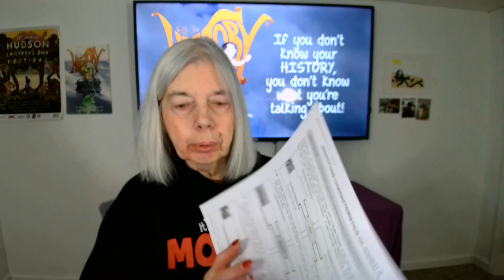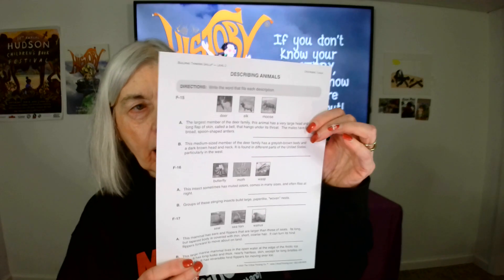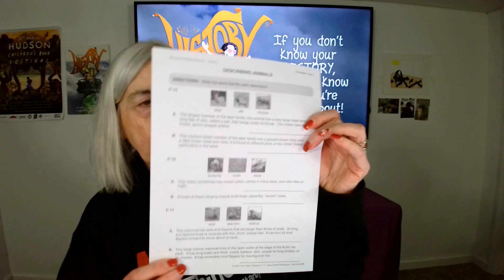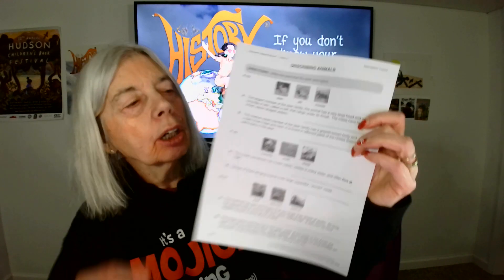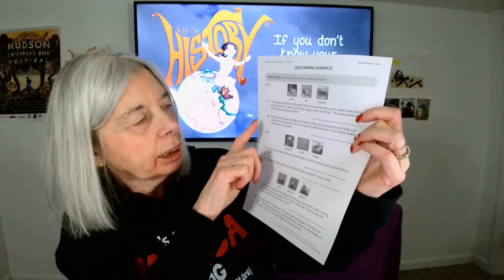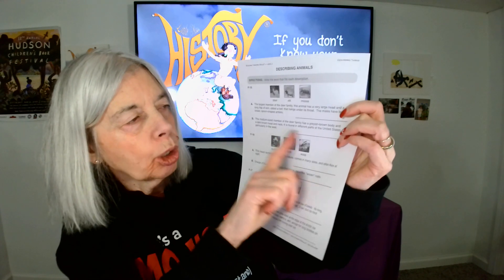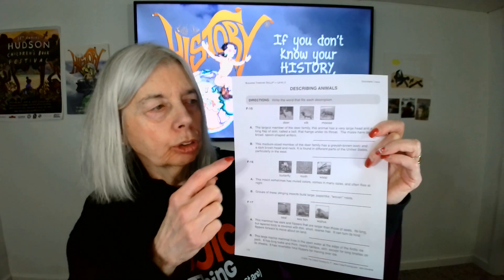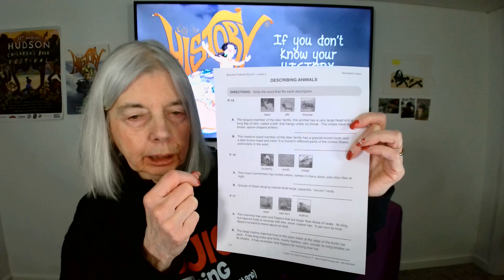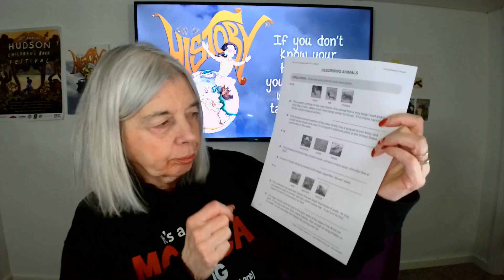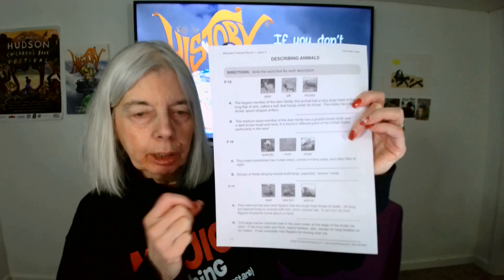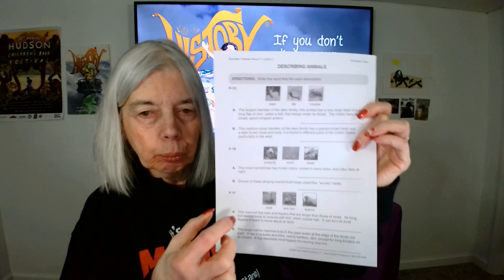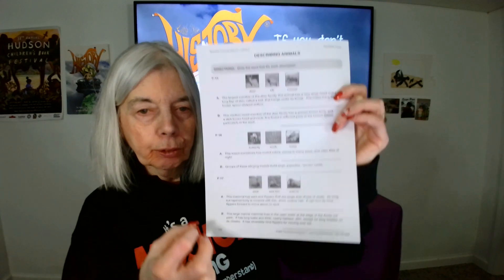After you've completed that, you're going to move on to the second worksheet. In each section, you're going to be given pictures of three animals and information in the sentences below the picture. Then you're going to choose which of those animals in the picture answers the question. There are three separate stories, each one has three choices — you're going to pick two out of the three animals for each one.